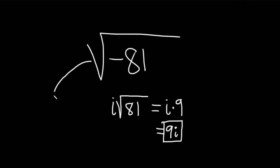What you do is the following: Whenever you see a negative under a square root, it automatically becomes an i. And then the square root of 81, that's going to be 9.